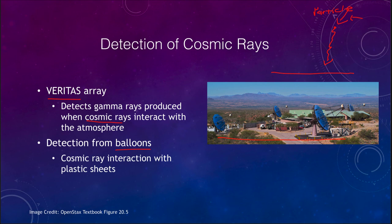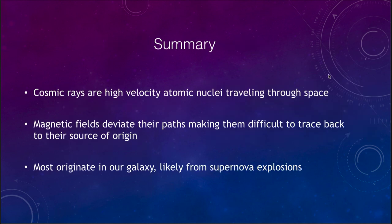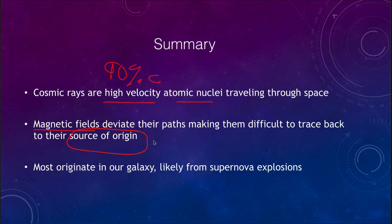Cosmic rays are also hard to detect directly because they do not make it down through the earth's atmosphere. In summary, cosmic rays are very high velocity atomic nuclei — traveling at about 90% of the speed of light — that travel through space. They are difficult to track because magnetic fields cause their paths to deviate, making it hard to trace back to their source. We believe most originate within our galaxy, probably from supernova explosions.